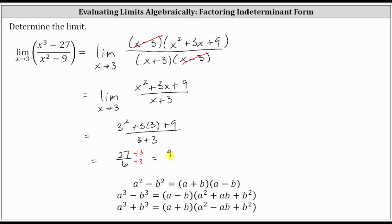27 and six share a common factor of three. 27 divided by three is nine. Six divided by three is two. The limit is equal to 9 halves, or 4.5. I hope you found this helpful.